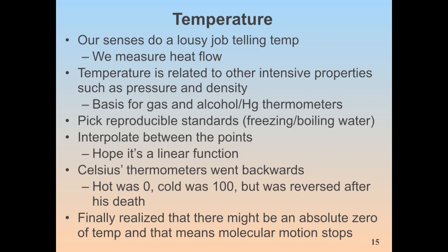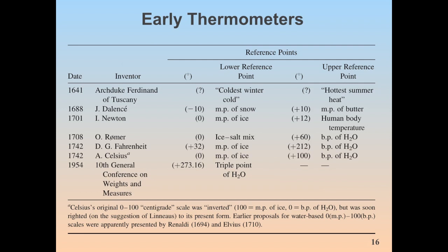Here's a summary of some early thermometers. In 1641, Archduke Ferdinand of Tuscany used low and high reference points based on winter and summer temperatures in Tuscany. In 1688, Delance used the melting point of snow as negative 10 and the melting point of butter as plus 10. In 1701, Isaac Newton used zero as the melting point of ice and plus 12 as human body temperature.